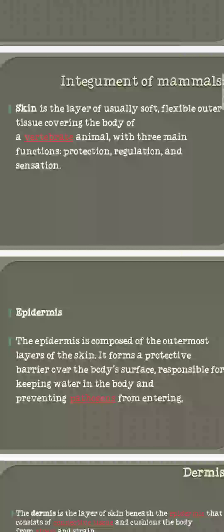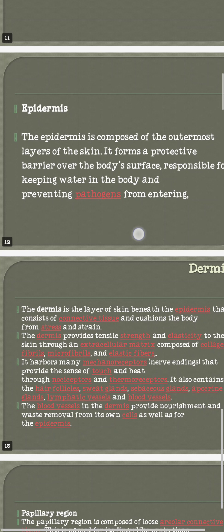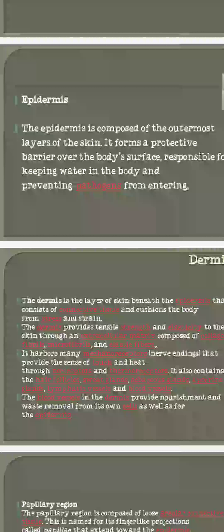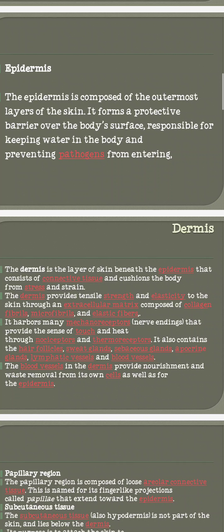In terms of sensation, the receptors in the skin detect pain and stimuli from the external environment. The skin of mammals consists of three layers: the epidermis (outermost), dermis, and hypodermis. The epidermis is a protective barrier on the body's surface, responsible for keeping water in the body and preventing pathogens from entering.